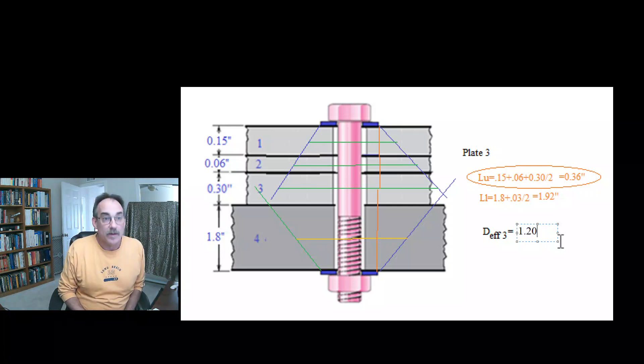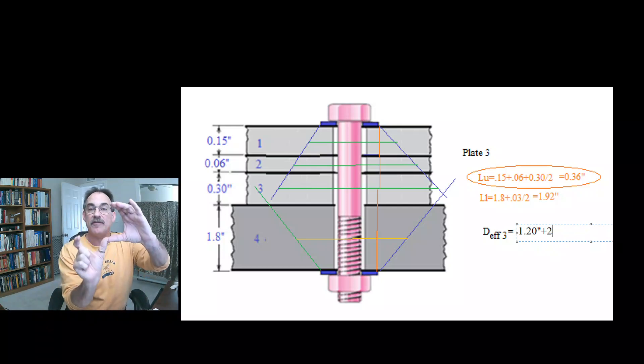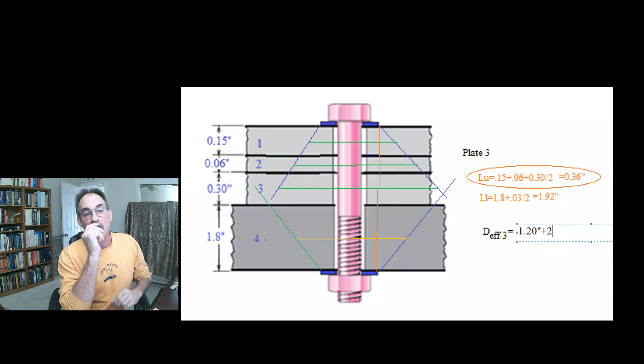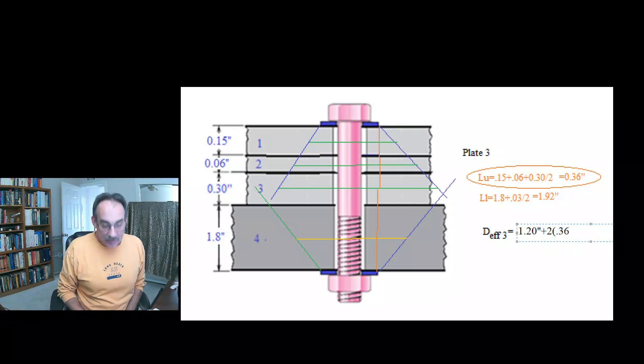Our effective diameter from plate number three will be the diameter of that washer that that's coming from, let's say that's 1.2 inches. Then we're going to be fanning out by two times, because each side, whatever that depth is, we're going to be fanning out tangent of that alpha times that distance. But in our case, we're assuming a 45 degree angle, so it's just twice that distance.